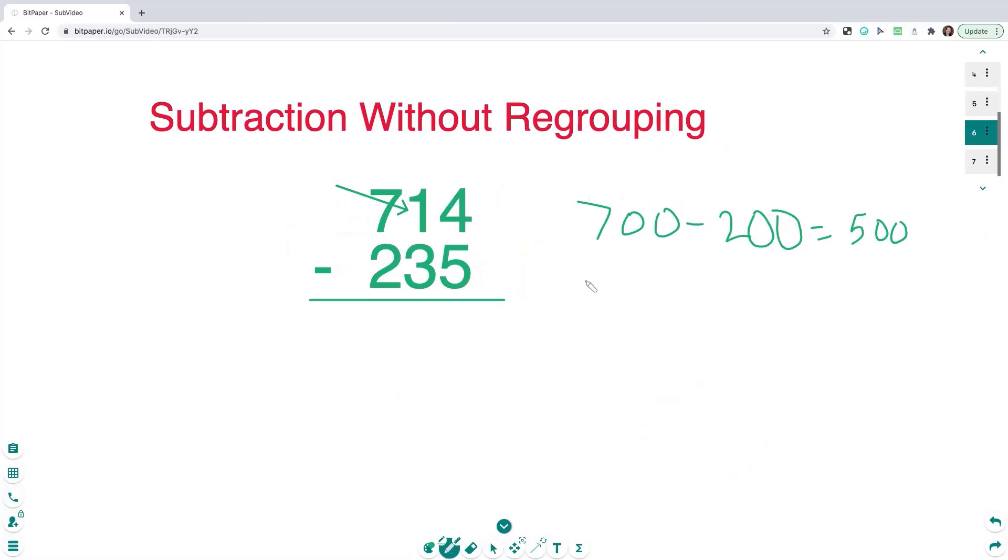And then jump on over to the tens place. We have that 1 is worth 10 and the 3 is worth 30. The difference between 10 and 30 is 20, but because we're starting at 10 and we're taking away 30, we're going to have a negative 20. And I'm just going to go ahead and finish this out and then we'll worry about combining these. So I'll jump over to the ones, 4 minus 5. And the difference between 4 and 5 is 1, but because 4 is smaller than 5, that's a negative 1.